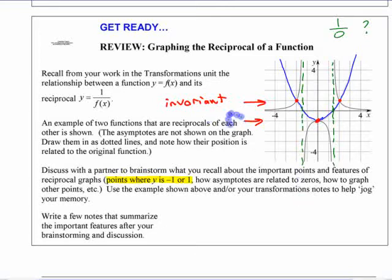So you have points at 1 and negative 1 are invariant. They don't change, so the graph intersects its reciprocal there. And asymptotes occur where the original function is 0. And the reverse is actually going to be true as well. If the original graph had an asymptote, what do you think the reciprocal would have?